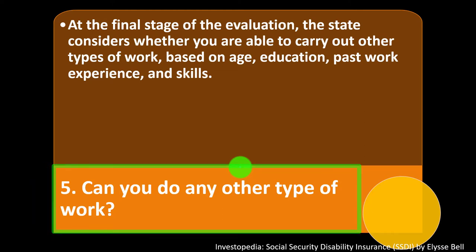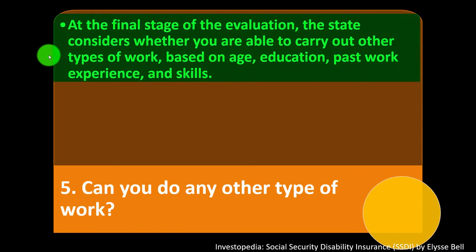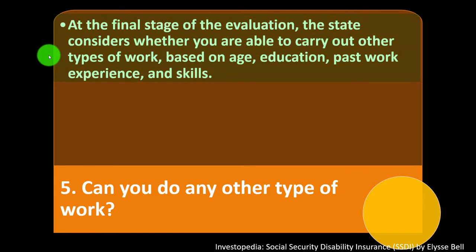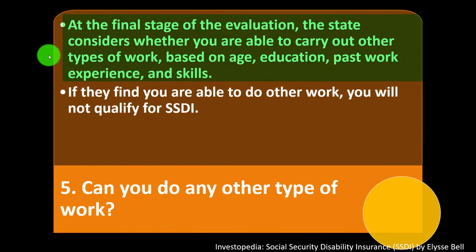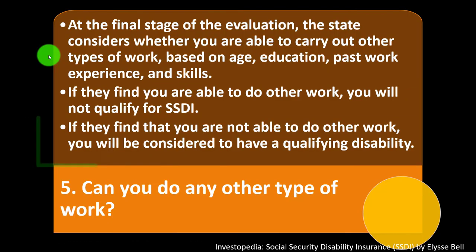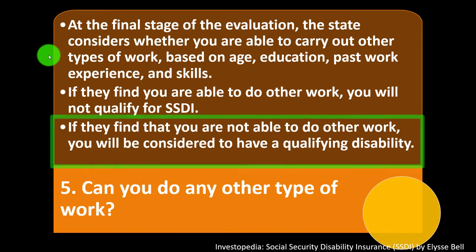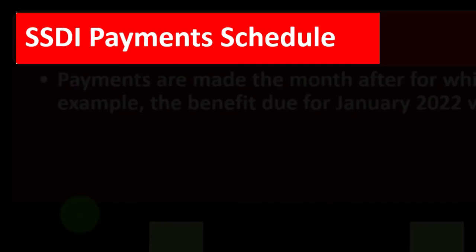Step five: Can you do any other type of work? The state considers whether you are able to carry out other types of work based on age, education, past work experience, and skills. If they find you are able to do other work, you will not qualify for SSDI. If they find you are not able to do other work, you will be considered to have a qualifying disability.